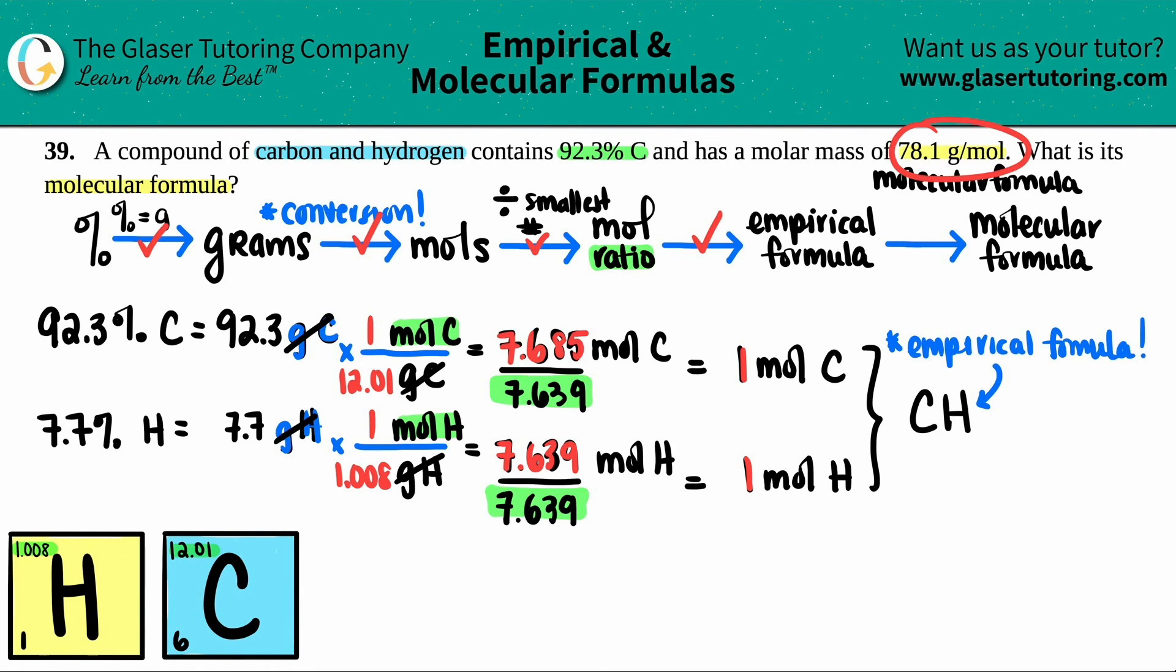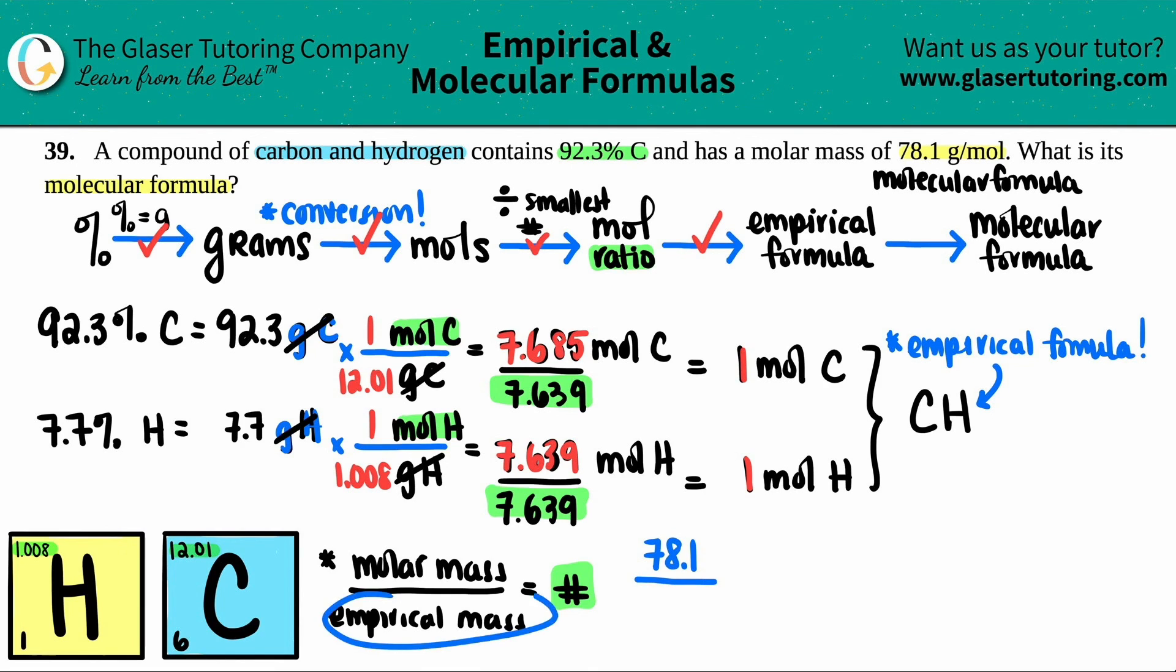Now we just got to take that empirical formula and go to the molecular formula. Now this number finally comes into play. What you're going to do is you're going to take, I'll put this down here. So you're going to take your molar mass or your molecular mass, because they might say it differently, and divide it by your empirical mass. And you're going to get some number. So that's what we're looking for. We're searching for the number that the molar mass divided by the empirical mass is. Now they told us what the molar mass was. They told us that it was 78.1. Now, if you want to put grams per mole, that's fine with me, but let's not use the units. So it's 78.1 divided by, now we've got to find that empirical mass.